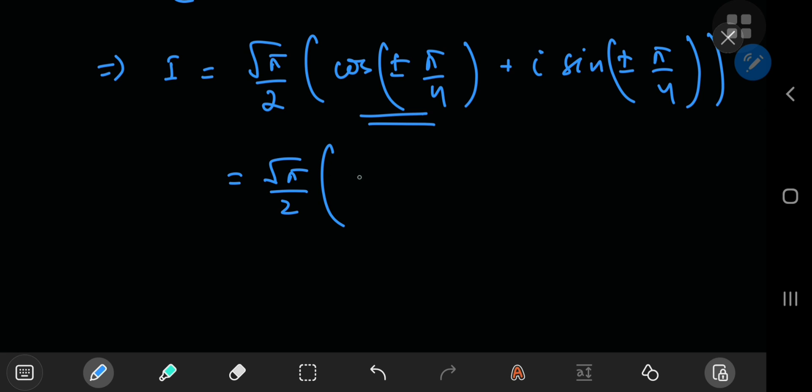So no matter what the sign of the argument, you are still going to get the same answer regardless. So you will get the cosine of pi by 4, which is 1 by square root 2. And the sine function now, that is an odd function.